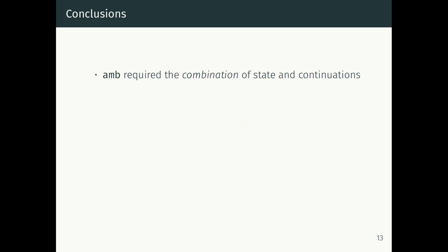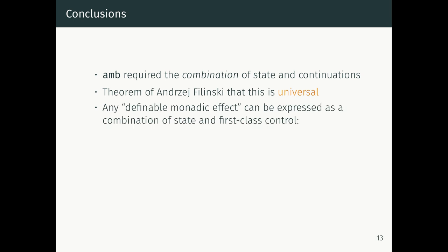That is how AMB works as a program. The important thing is that AMB required the combination of both state and continuations. Escape continuations just capture a continuation and jump to it immediately. But for backtracking, we needed to remember what the old continuations were, requiring state — a reference cell to store old continuations. There's a theorem by Andrei Filinski, proved about 25 years ago, that the combination of state and continuations is a universal effect: any definable monadic effect can be expressed as a combination of state and first-class control. Exceptions, green threads, coroutines, generators, random number generation — all can be expressed with state and control.